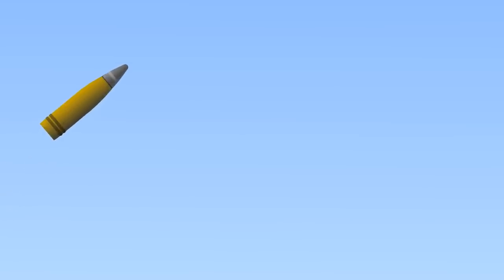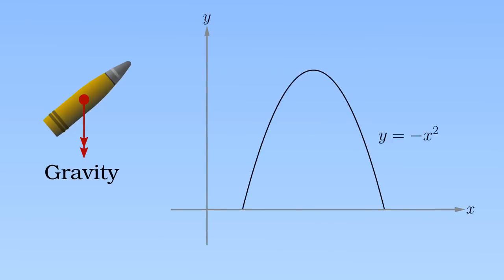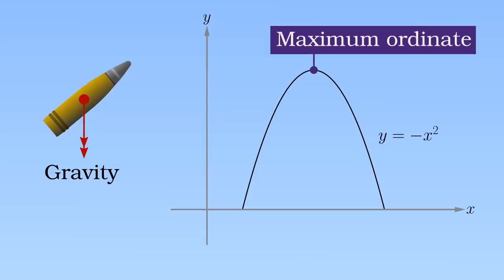Once a shell leaves the muzzle, it feels a gravitational force directly towards the center of mass of the planet. If we ignore all other forces and the curvature of the planet, the shell will follow a parabola, an upside-down x-squared curve you might be familiar with from high school. The highest point in the trajectory is called the maximum ordinate. This is where the shell has converted the largest proportion of its kinetic energy into gravitational potential energy, so it has slowed down. The Allied manual gives the height of the maximum ordinate and also the distance along the ground underneath the trajectory for different elevation angles.